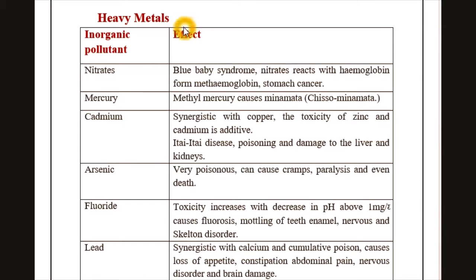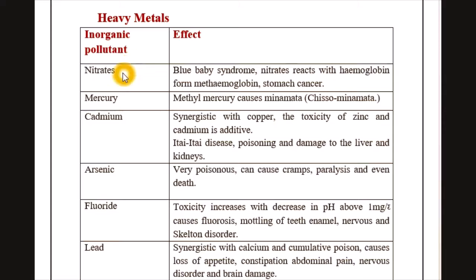The next pollutants are heavy metals. These are the most harmful elemental pollutants and are more dangerous to humans. These elements are mostly transition elements. For example, if the percentage of nitrates increases in water, it causes blue baby syndrome and stomach cancers.